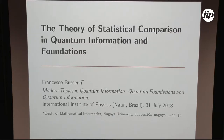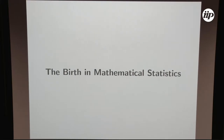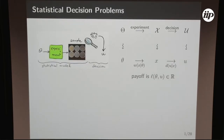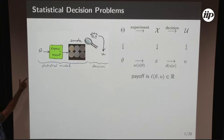The theory of statistical comparison and some applications in quantum information and foundations. First of all, I would like to introduce what the theory of statistical comparison is, because this is not something that everybody knows, but it provides a very good framework to study many of the problems that are now hot topics in quantum information theory. The origin of statistical comparison theory was formulated in mathematical statistics in the 1950s.